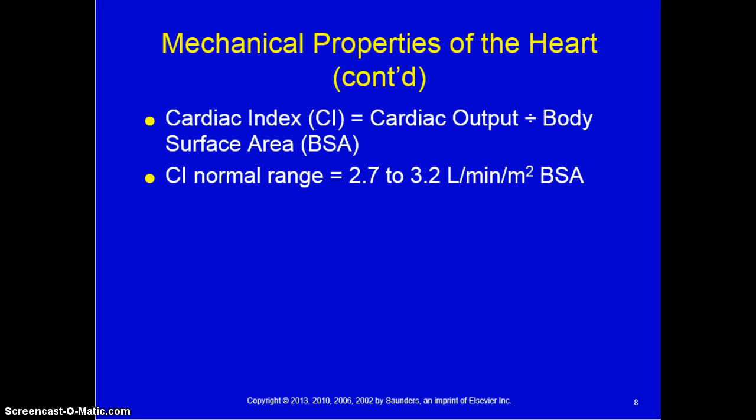Considering the properties of the heart, cardiac index is cardiac output divided by body surface area. A normal cardiac index is 2.7 to 3.2.